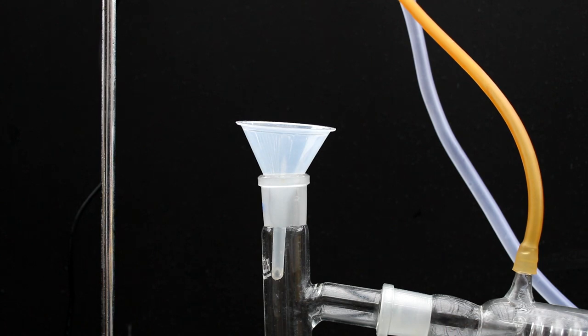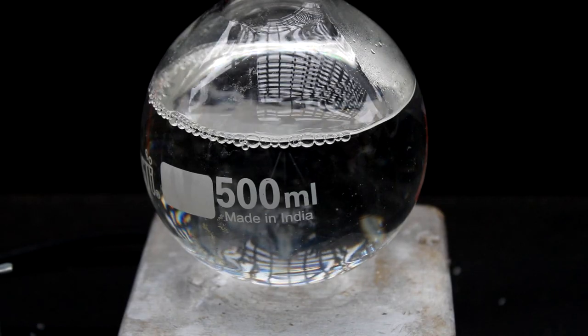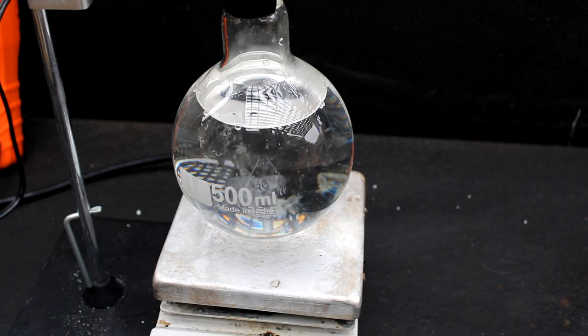All we need to do is set up a simple distillation and distill over the ethanol. I emptied this full 16 ounce bottle into my 500 milliliter flask and then added a stir bar to help the solution boil evenly.